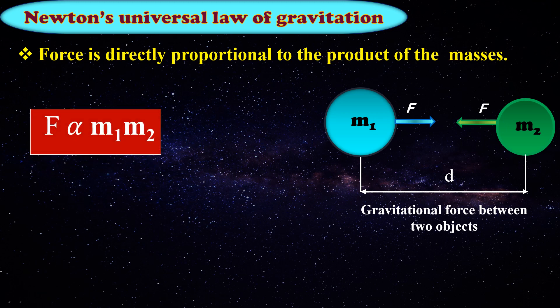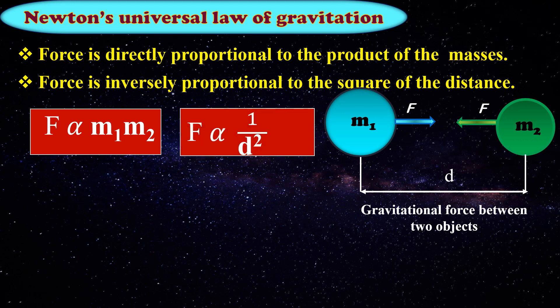According to Newton's universal law of gravitation, force is directly proportional to the product of the masses, that is M1 and M2. Force is inversely proportional to the square of the distance, that is 1 by D².